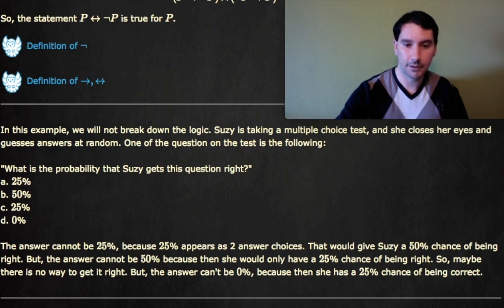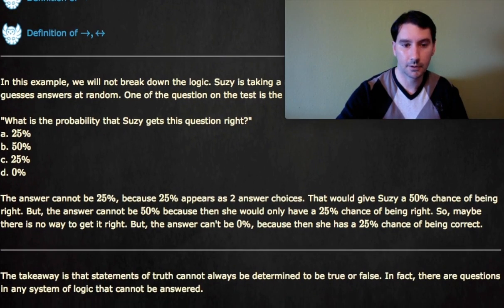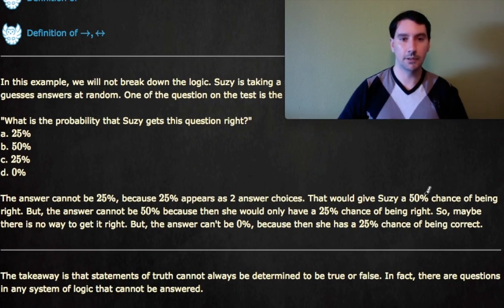And the takeaway from all this is that statements cannot always be determined as either true or false. And this actually ends up being true in any system of logic. Every system of logic includes paradoxes, and it's just something to be aware of at this point.